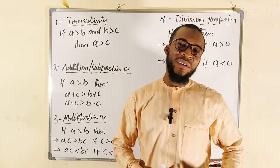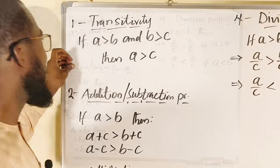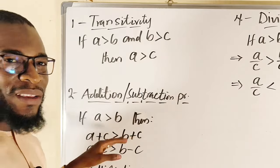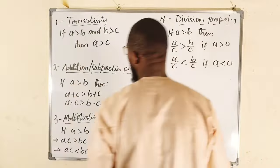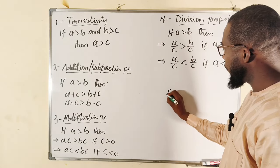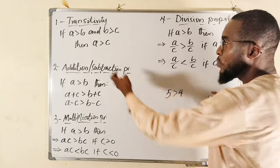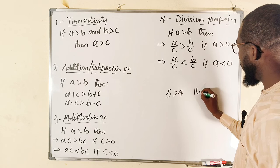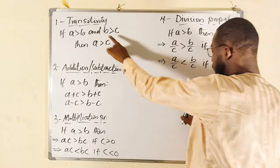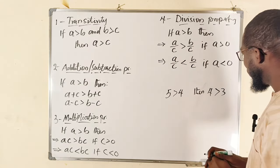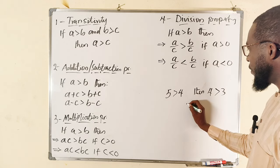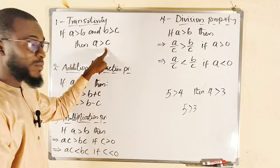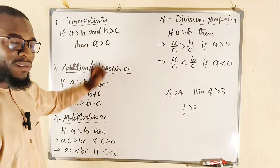Hello dear viewers, here are some properties of inequality you should know. The first one is transitivity: if a is greater than b and b is greater than c, it implies that a must be greater than c. For example, suppose a is 5, and 5 is greater than 4, and 4 is greater than 3. We can clearly see that 5 must be greater than 3 — that is, a is greater than c.